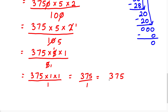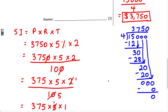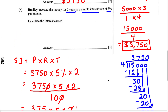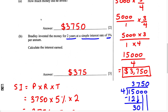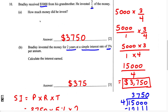The answer is $375. In the answer space provided, write $375. That is the interest earned when Bradley invested the money for two years at a simple interest rate of 5% per annum. Remember, 'per annum' just means per year, so don't get confused. This is how you solve a problem like this.